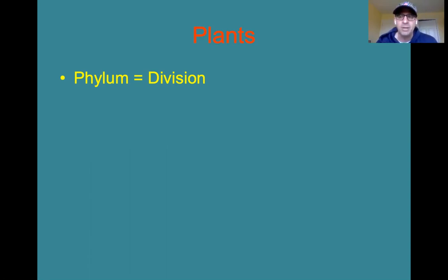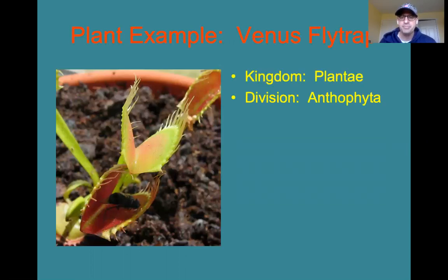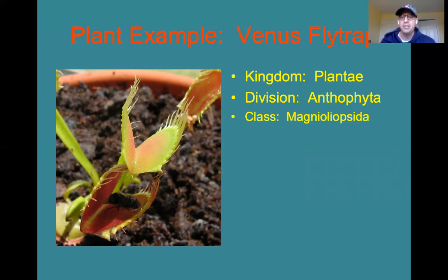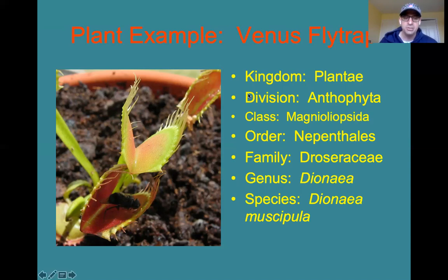Plants are a little bit different: instead of using the term phylum, botanists use the term division. When we take a look at the Venus flytrap, it belongs to kingdom Plantae — division instead of phylum — division Anthophyta, which is all flowering plants. Kingdom Plantae organisms are multicellular autotrophs that carry out photosynthesis. Division Anthophyta means they are flowering plants. Class Magnoliopsida, order Nepenthales, family Droseraceae, genus Dionaea, species Dionaea muscipula — your Venus flytrap — with each group having more and more in common as we go down.